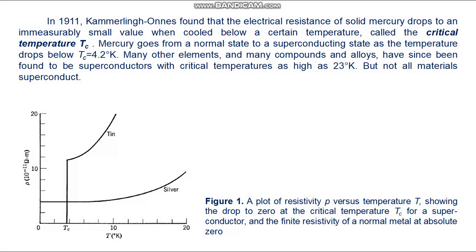In 1911, Kamerlingh Onnes found that the electrical resistance of solid mercury drops to an immeasurably small value when cooled below a certain temperature called the critical temperature. Mercury goes from a normal state to a superconducting state as the temperature drops below T_c equals 4.2 Kelvin. Many other elements, compounds, and alloys have been found to be superconductors with critical temperatures as high as 23 Kelvin, but not all materials superconduct.